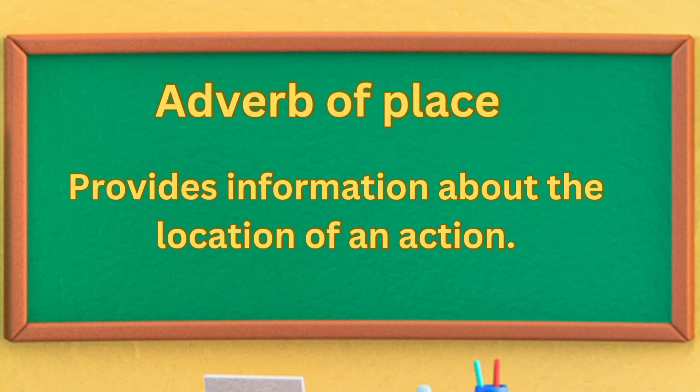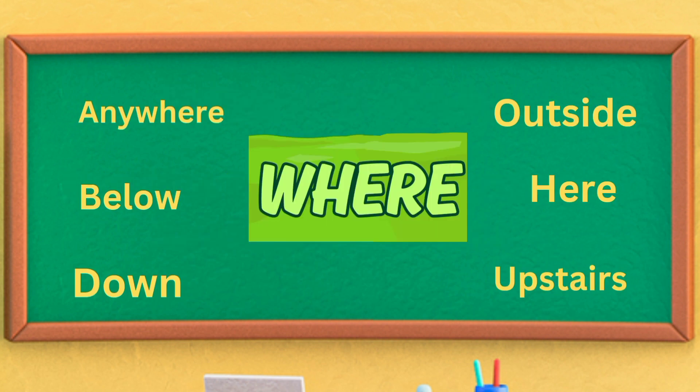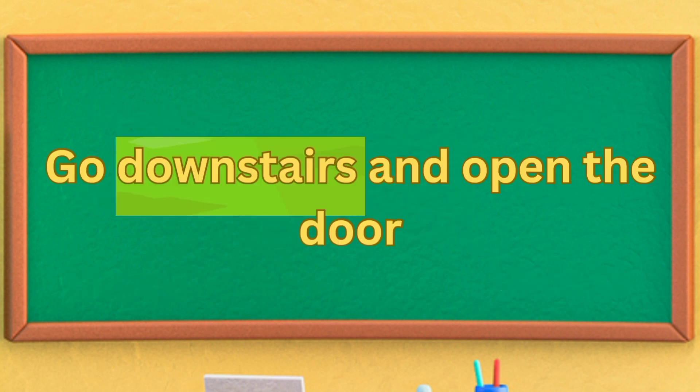Adverb of place provides information about the location of an action — it means where the action happens. Examples include anywhere, below, down, outside, here, and upstairs. For example: Go downstairs and open the door. Downstairs is an adverb of place.